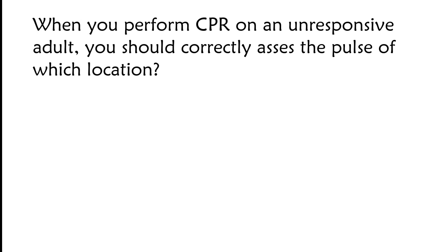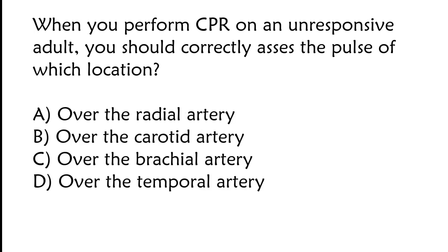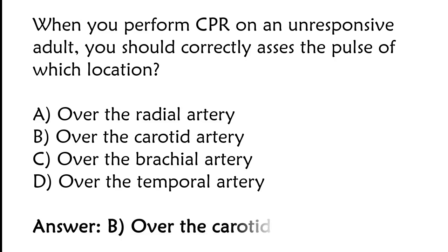When you perform CPR on an unresponsive adult, you should assess the pulse at which location? Options: over the radial artery, over the carotid artery, over the brachial artery, or over the temporal artery. The correct answer is option B: over the carotid artery.